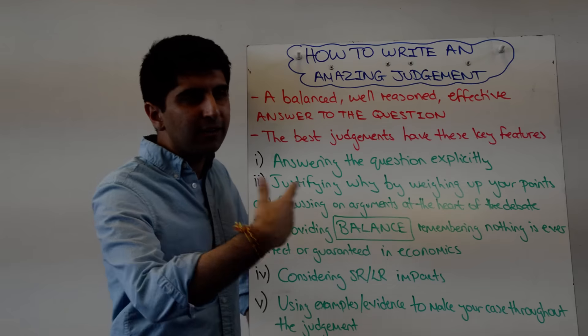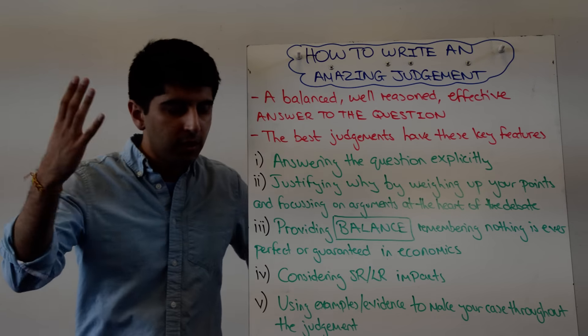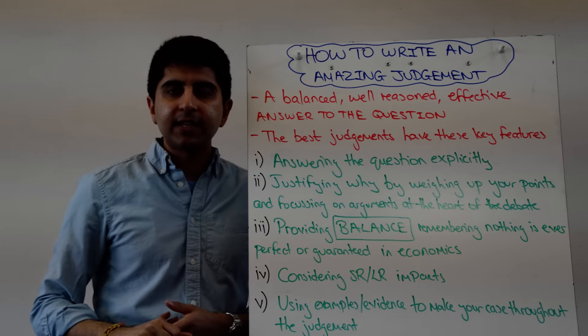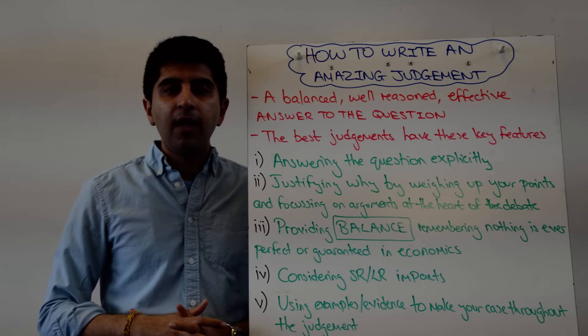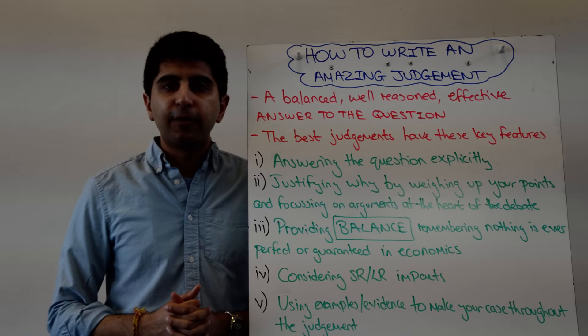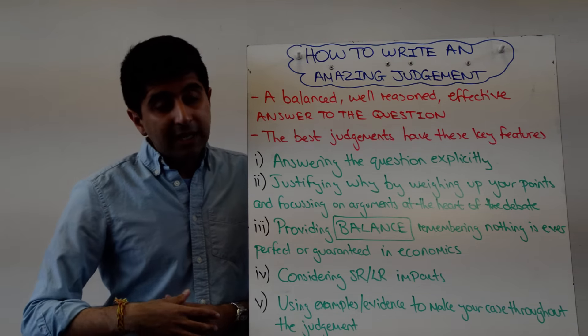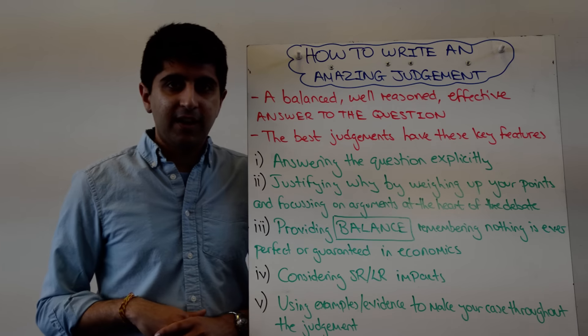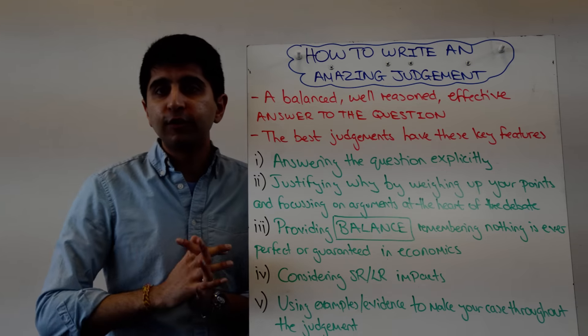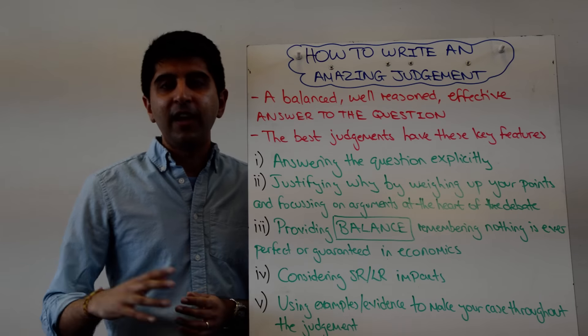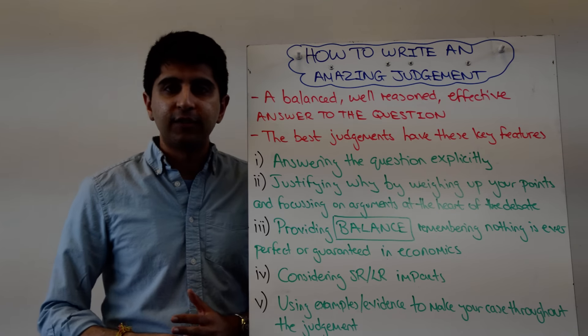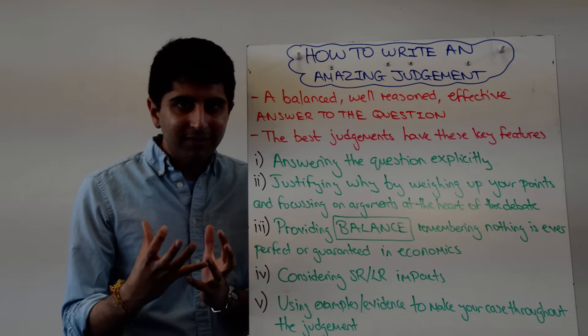So answering the question explicitly—like restating the question and answering it is often a very good way to go. So the question is, discuss whether indirect taxation is the most effective way in solving the overconsumption of cigarettes. You would say, indirect taxation is not the most effective way, or is the most effective way, or is not on its own the most effective way in solving the overconsumption of cigarettes. So you'd explicitly answer the question.